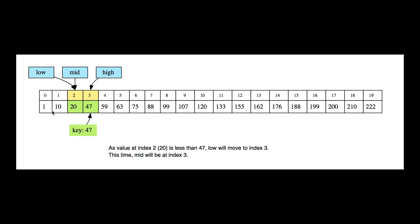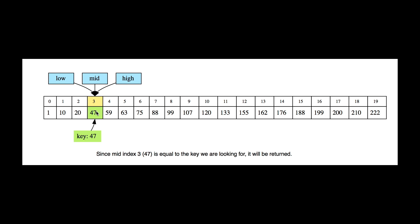We check the mid again and see it's still less than the target, so we do mid-plus-one, bringing the mid to index three. Everything — the mid, the high, and the low — converges at that same index. Since that's the index we're looking for, when we check the mid and see it's equal to 47, we return index three. In summary: if the target is greater than the mid, do mid-plus-one for the new low; if less, do mid-minus-one for the new high. Then recalculate the mid and check again.